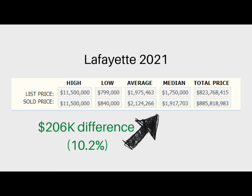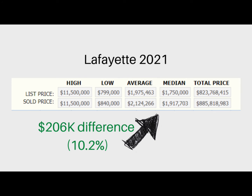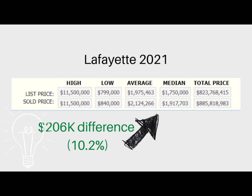That's a $67,000 difference between the two figures, which turns out to be about four and a half percent — significant but not earth-shattering. For comparison, Lafayette, which is just next door but a different market: an average sold price of $2,124,266 while the median was $1,917,703. That is a $206,000 difference between the two numbers, which turns out to be over 10 percent — quite significant.